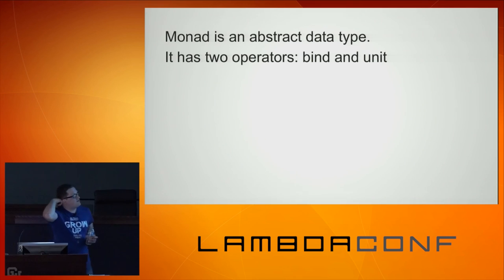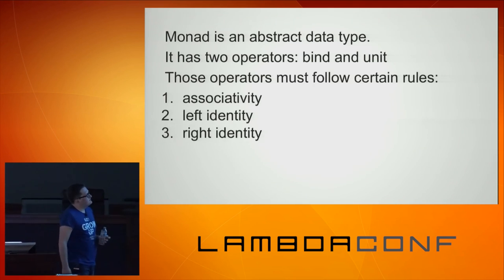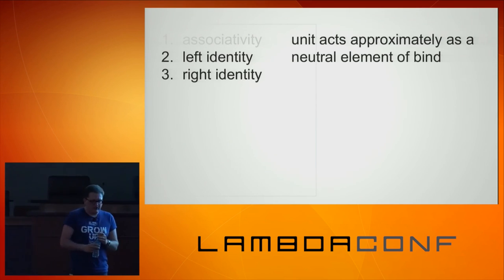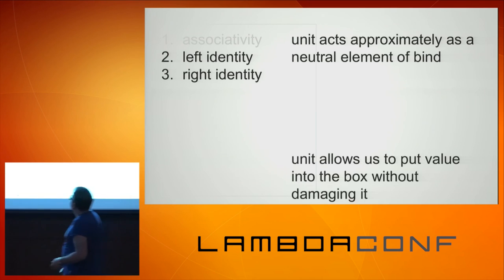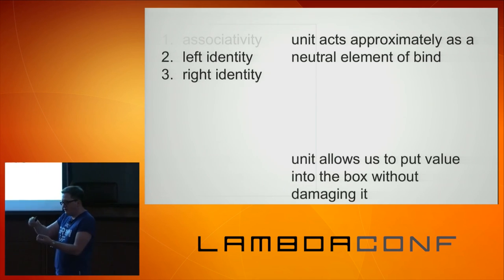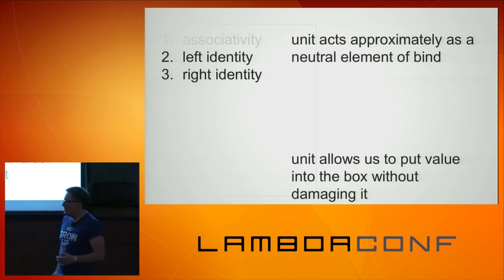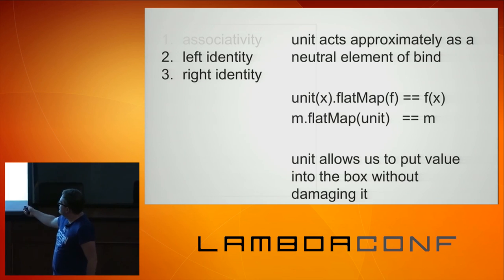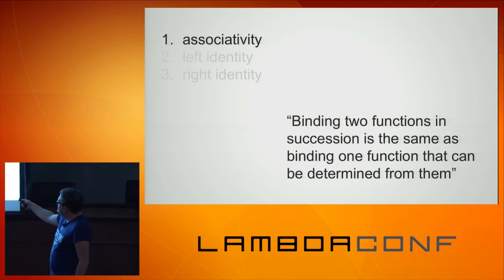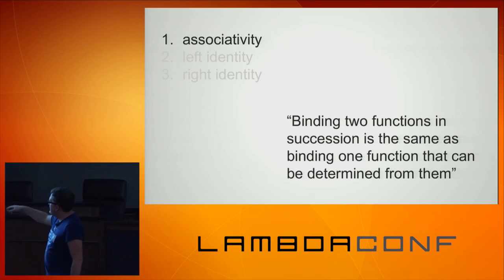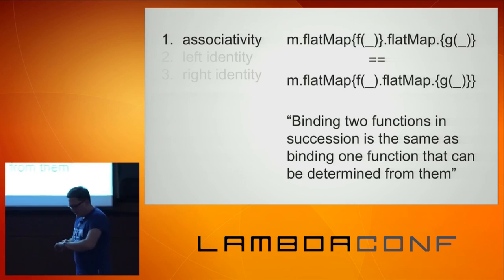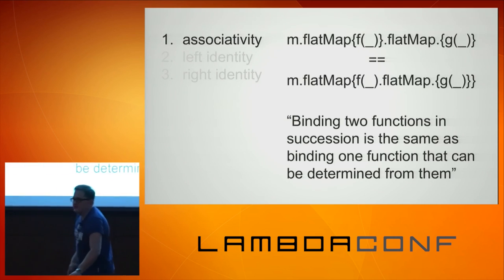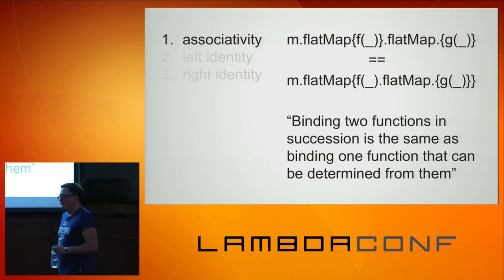So monad is an abstract data type. It has two methods: bind and unit. And there are some laws around those methods. The first two laws, left identity and right identity, are saying that the unit method should act as a neutral function over the values. In other words, if you put a value and create a monad using the unit method, it shouldn't damage the value you put in. The other rule, associativity, means binding two functions in succession is the same as binding one function determined from both of them. I don't have time to go into them, but you can ask questions later.